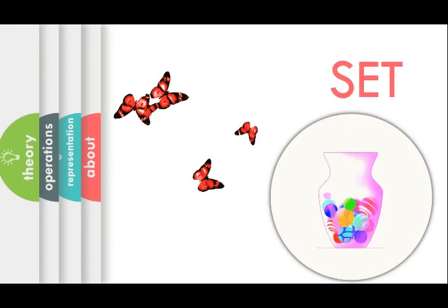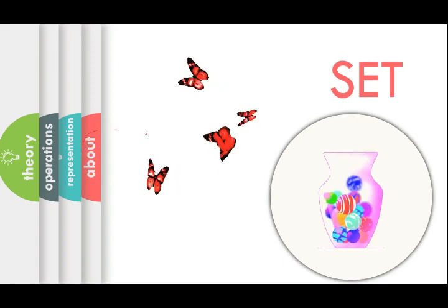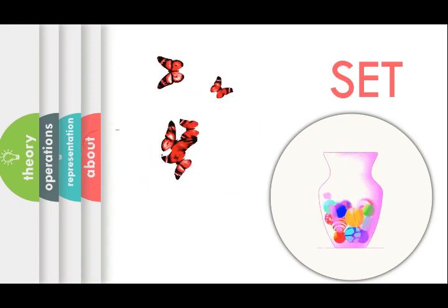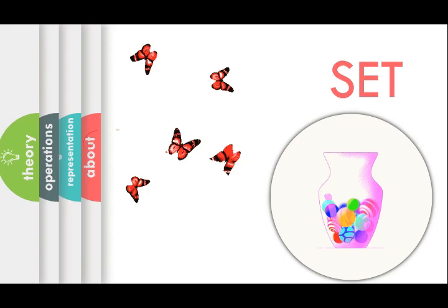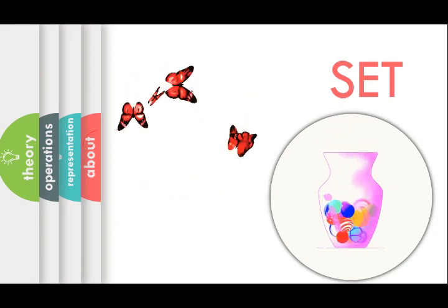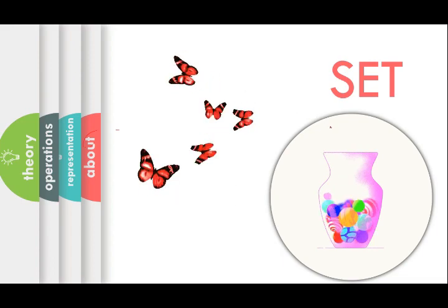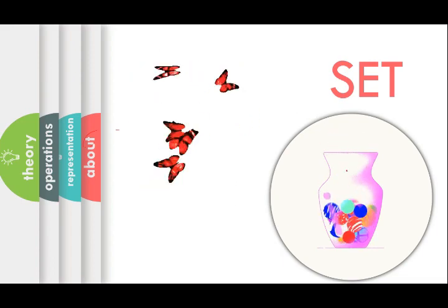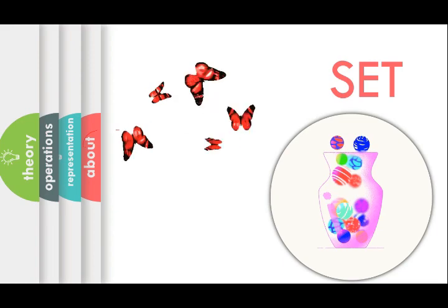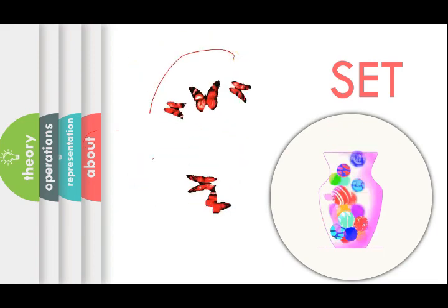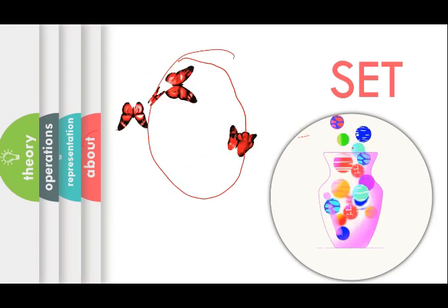So why are we using sets? Can you say what is this? These are butterflies. Can I group these butterflies into one common collection? These are all the same type of animals, so I can say this is a group of butterflies. In the same way, in the vase, all these are balls. So for forming a group or collection of homogeneous types of objects or elements, we use set theory.